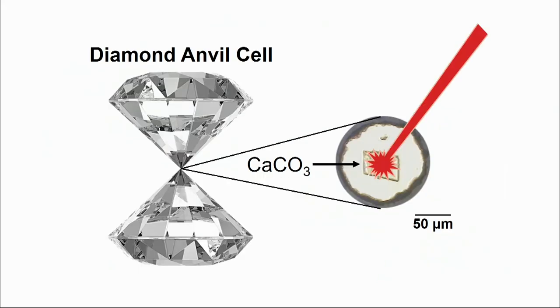Accordingly, we modeled the journey of calcite to the lower mantle by performing laser-heated diamond anvil cell experiments. First, we squeezed teeny-tiny samples smaller than the thickness of a human hair between the tips of two diamond anvils, and then we heated it with a laser.